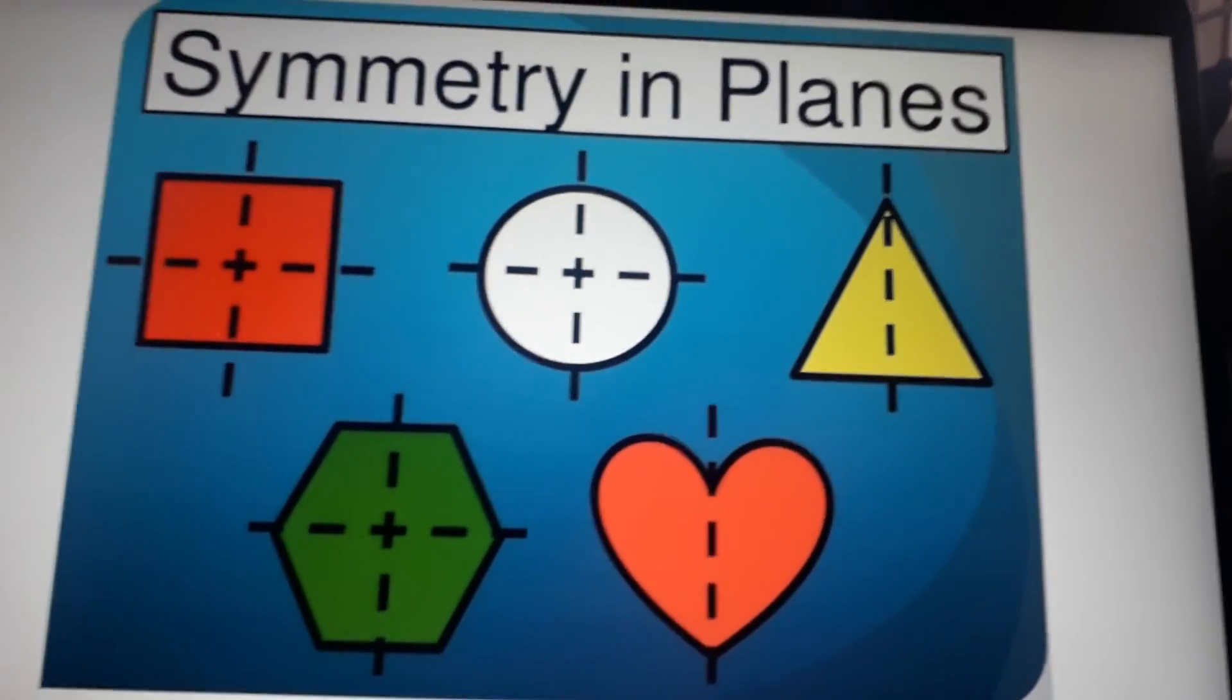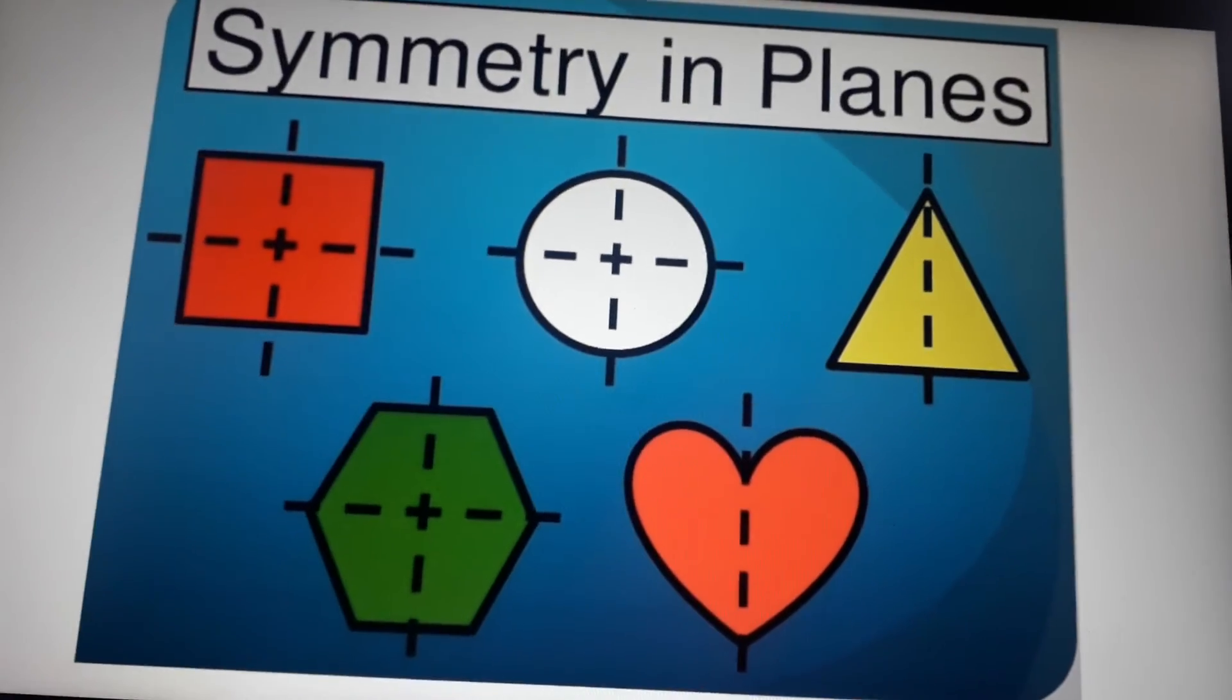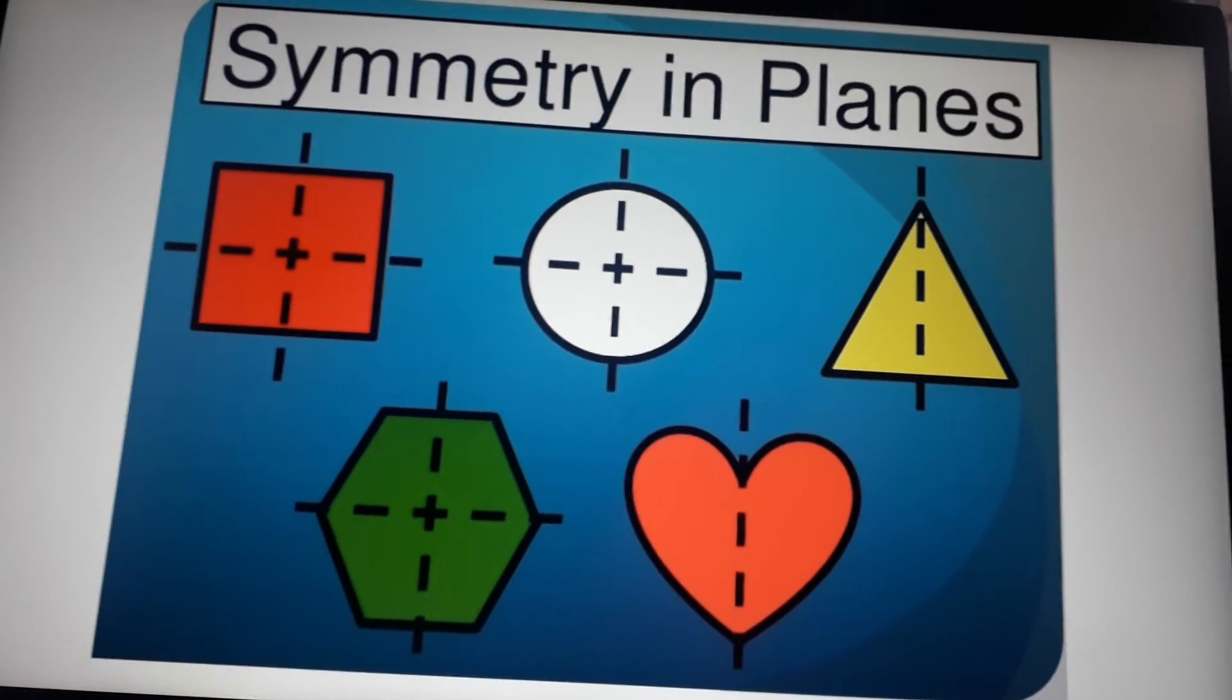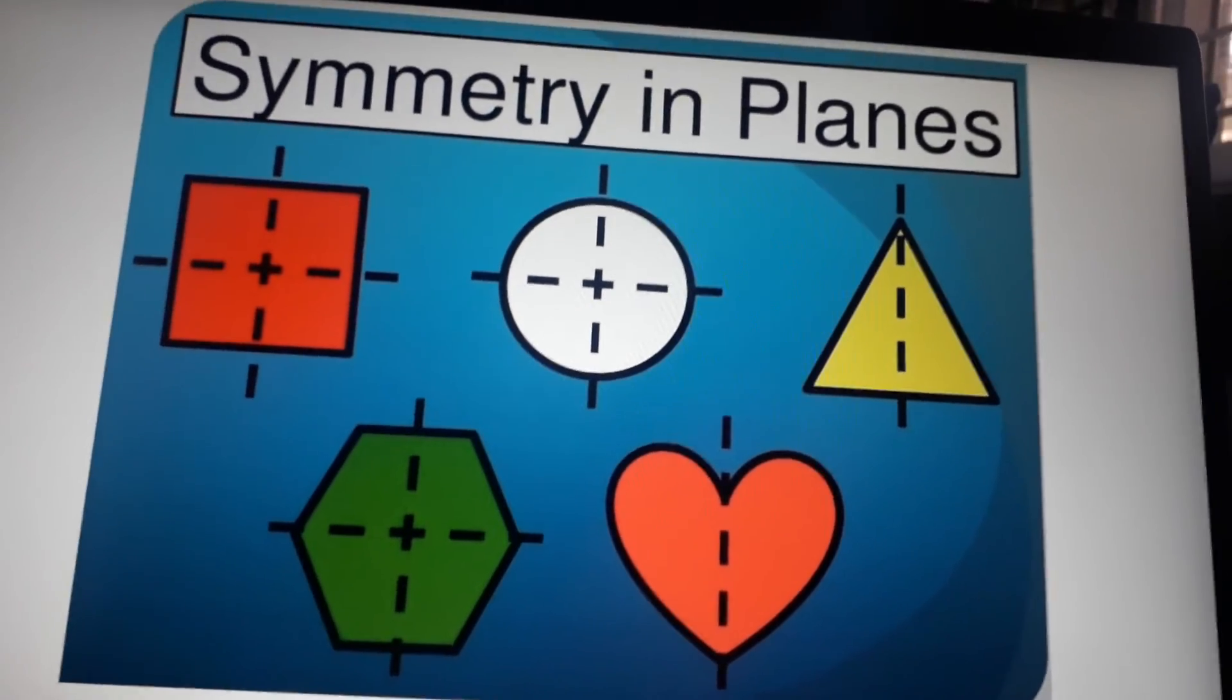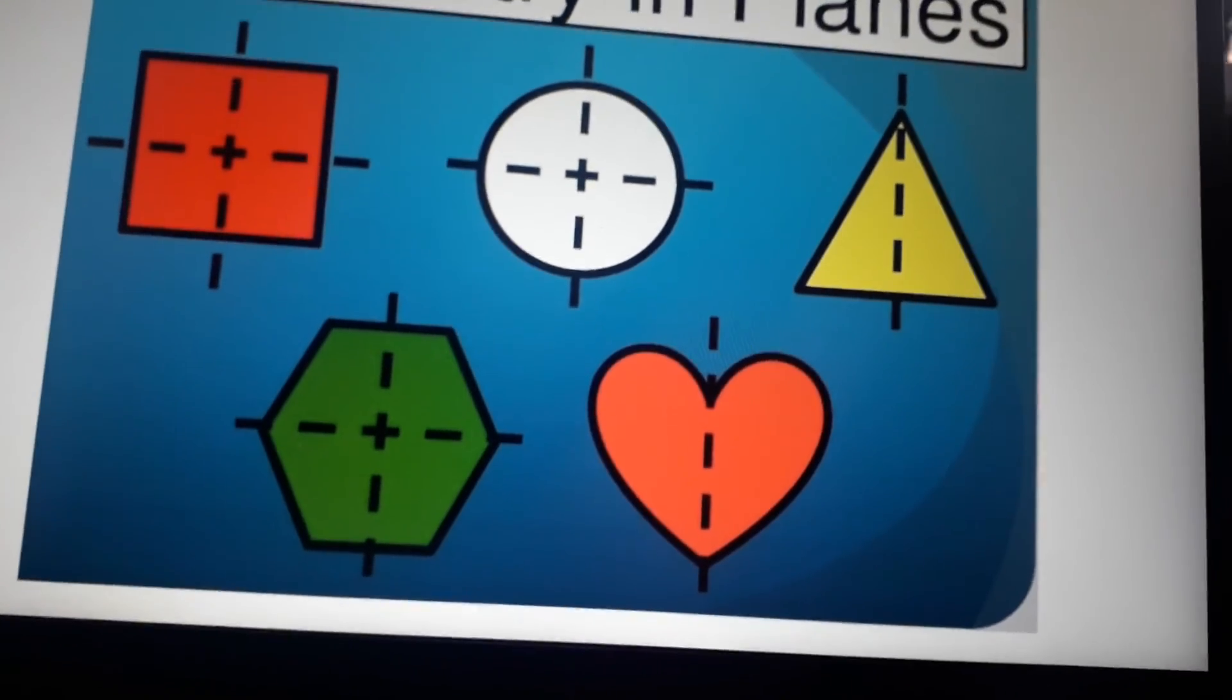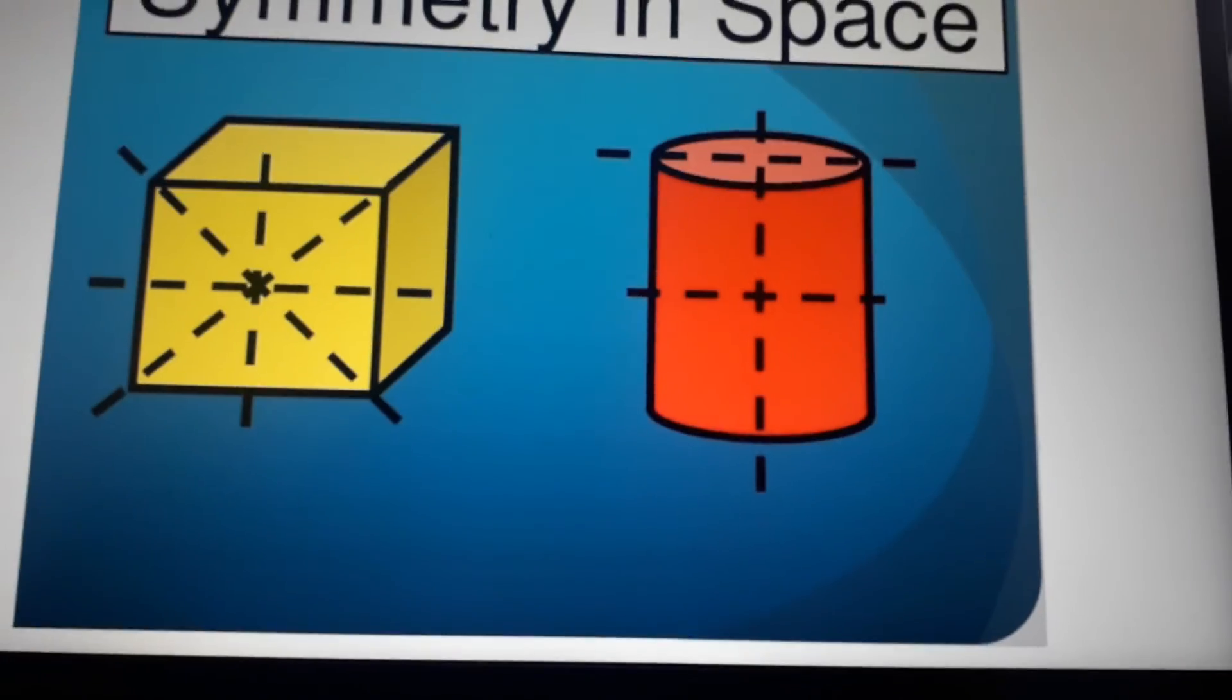Symmetry in planes: square can be divided into four or more, circle can be divided infinitely, triangle can be divided just once, hexagon many times or only six times, heart only one time.